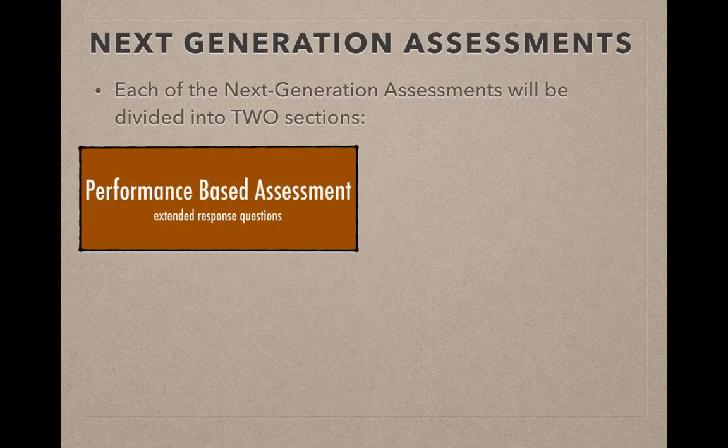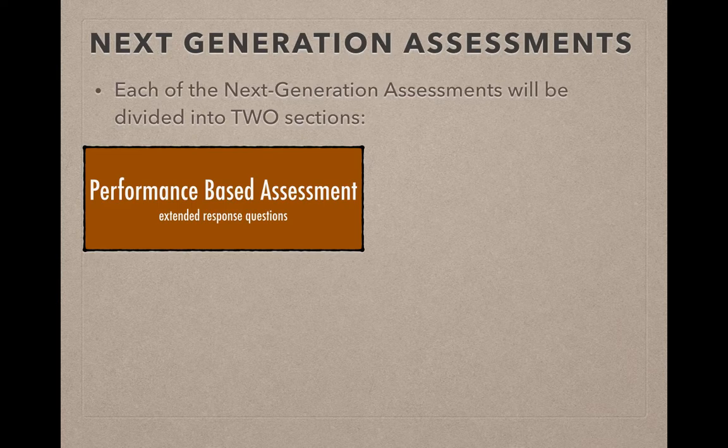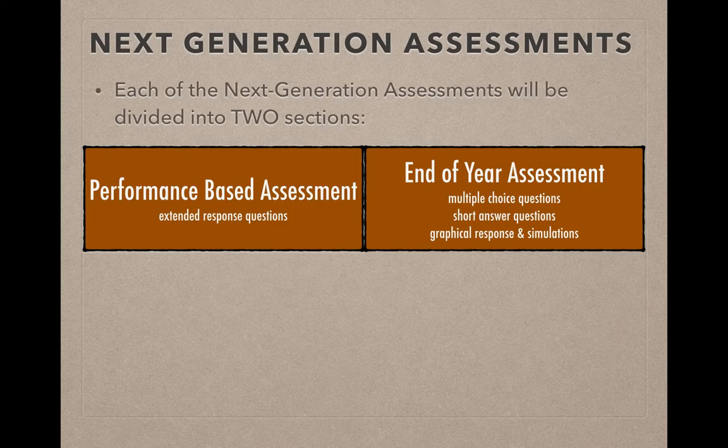The first section is titled Performance-Based Assessment, or PBA, and these are mostly extended response type questions — longer responses that kids will have to type out. The second section, at about 90% of the way through the school year, will be called the End of Year Assessments, or EOY. These will mostly be multiple choice type questions, short answer questions, graphical response, and simulation type questions.